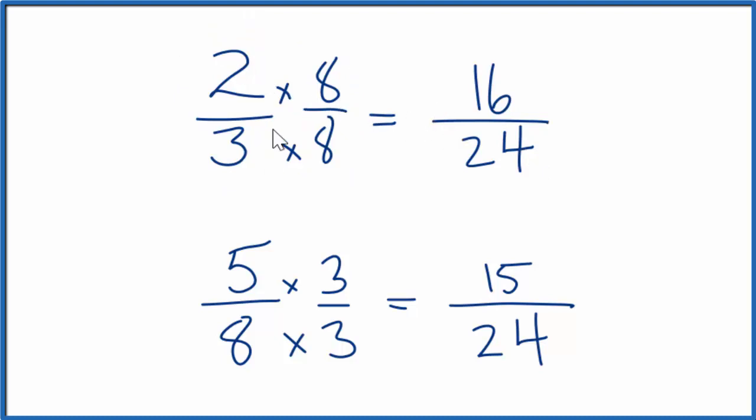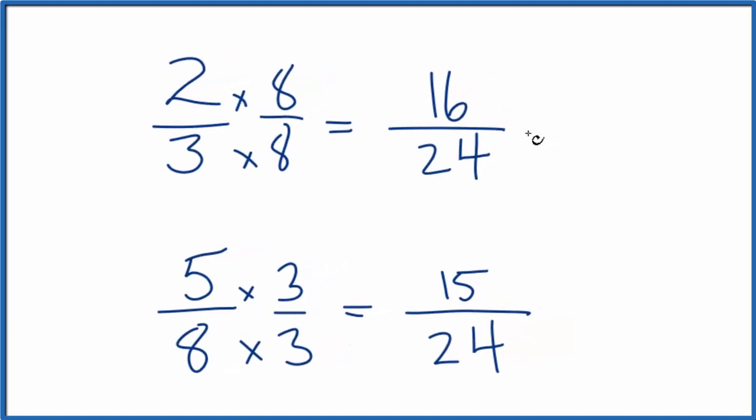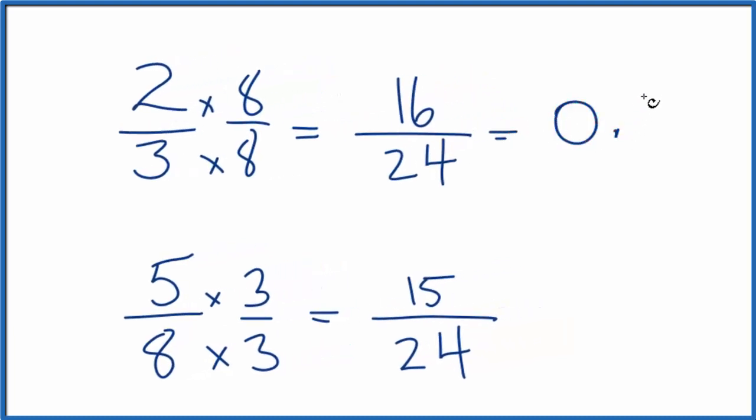We could also convert 2 thirds to a decimal. So 2 divided by 3, or 16 divided by 24 is 0.66, and it repeats. So let's just call it 0.666. Down here, 5 divided by 8, or 15 divided by 24, that equals 0.625.